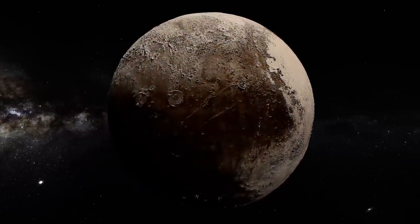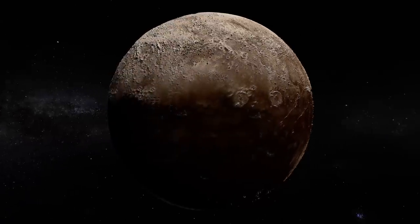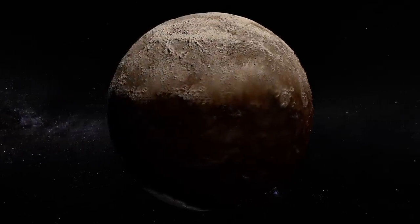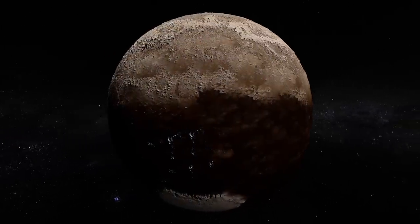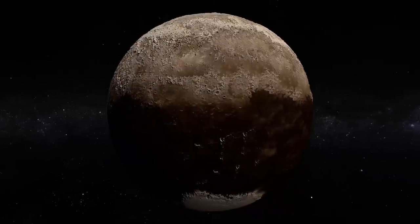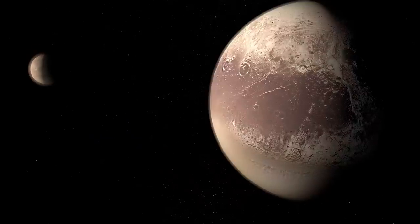Its atmosphere, very thin, appears in gaseous form when its revolution brings it closer to the Sun, than in the form of ice when it moves further away from it. We know six satellites to Pluto, including Charon, which is the largest with the diameter of 1212 kilometers, or 750 miles.